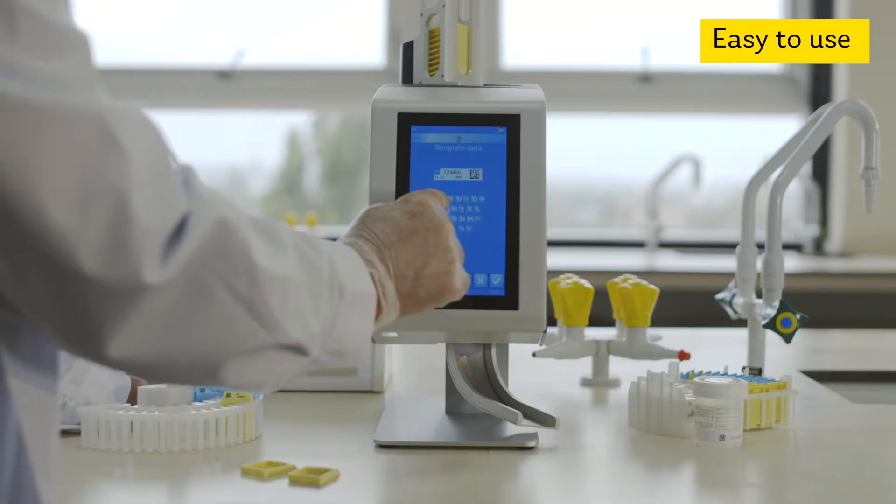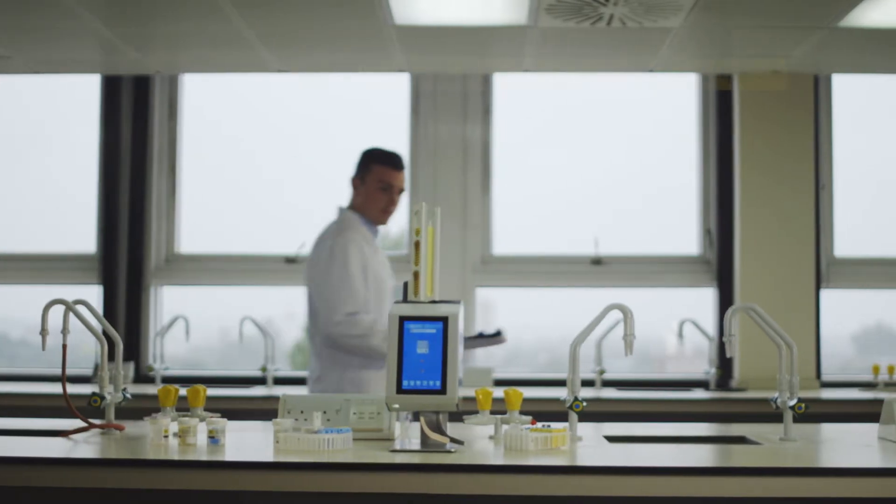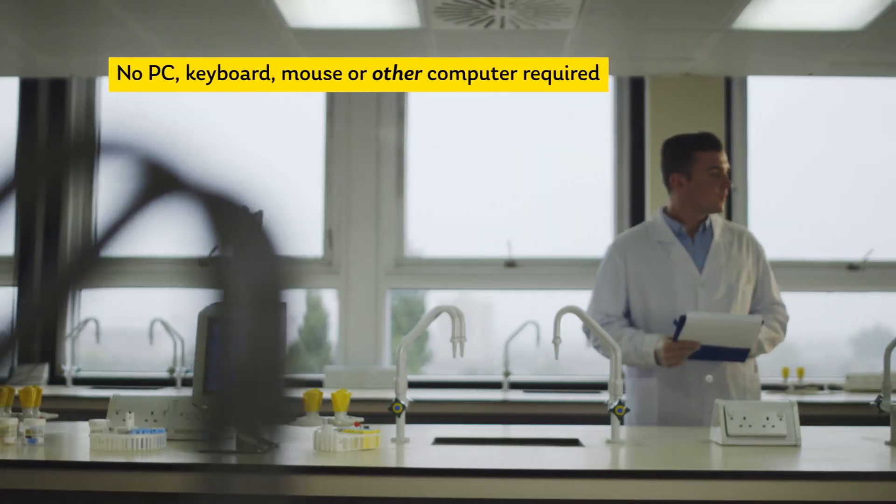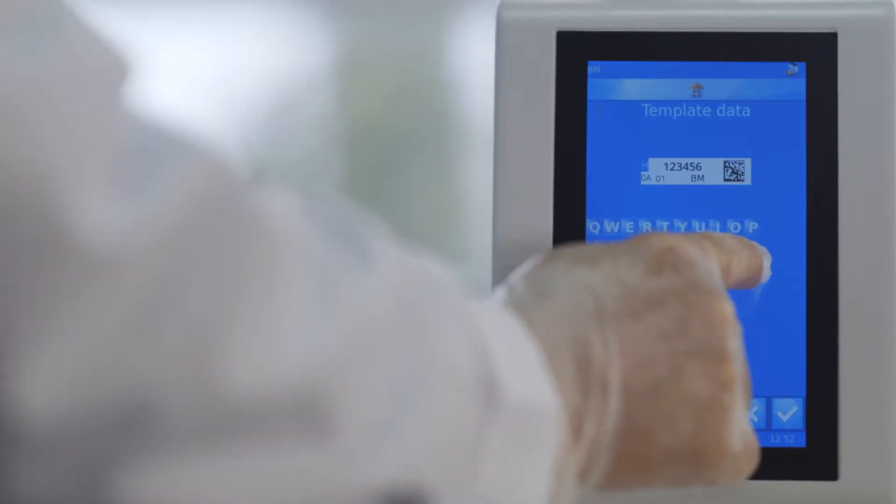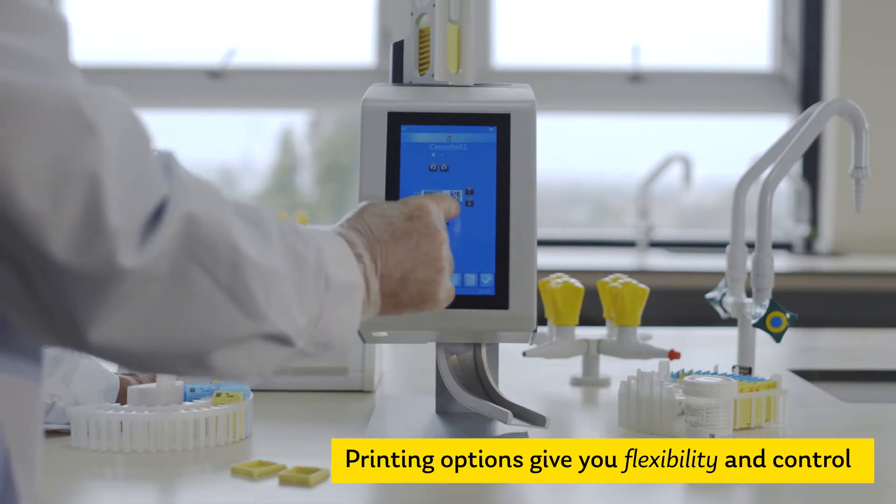The color touch screen operates just like a smartphone. As a standalone printer, it requires no PC, keyboard, mouse or other computer, due to its in-built software and on-screen keyboard, with numerous printing options to give you flexibility and control.